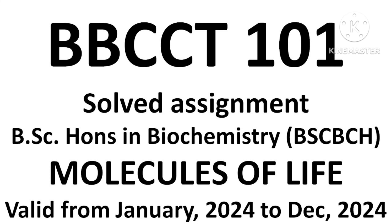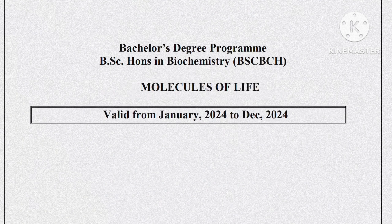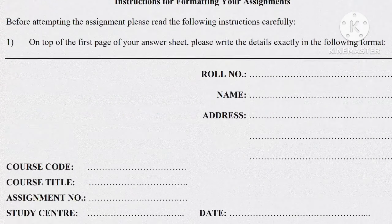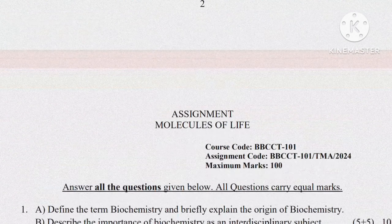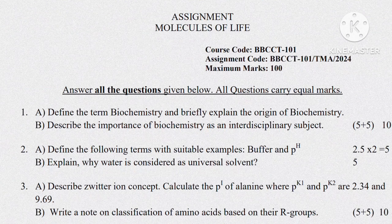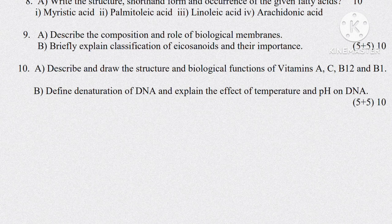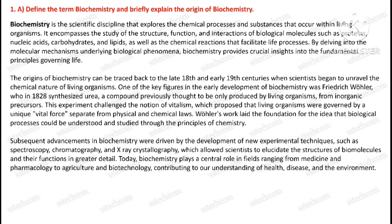Hello viewers, welcome to my channel. Today we are showing the solved assignment of BBCCT 101. This assignment is valid from 1st January 2024 to 31st December 2024. Question number one, first part: define the term biochemistry and briefly explain the origin of biochemistry.